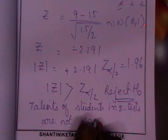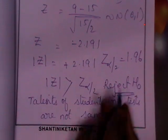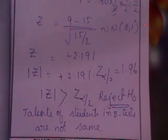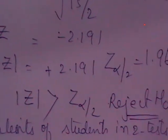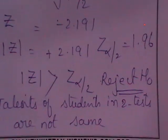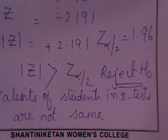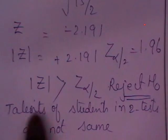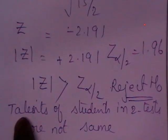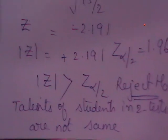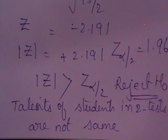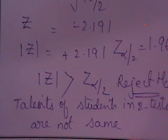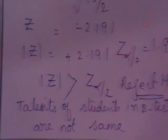If we had accepted the null hypothesis, we would write the same statement as H0. Since we are rejecting it, we write the negative form: the talents of the students in the two tests are not the same.